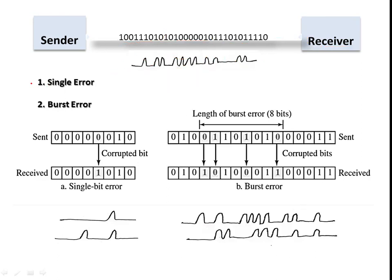We classify errors into single error and burst error. A single error means a small voltage fluctuation causes one bit to flip — a 1 becomes 0 or a 0 becomes 1. Burst error is more common because thousands of bits are transmitted and due to external factors and electrical properties, many bits during transmission may change. This corrupts larger portions of the received data, which is called a burst error.